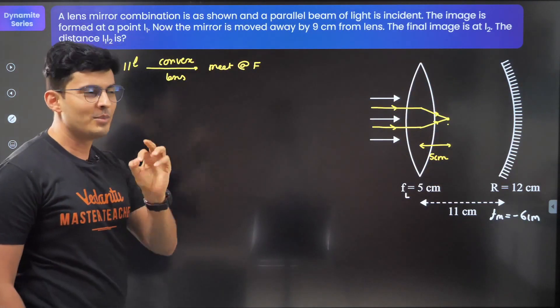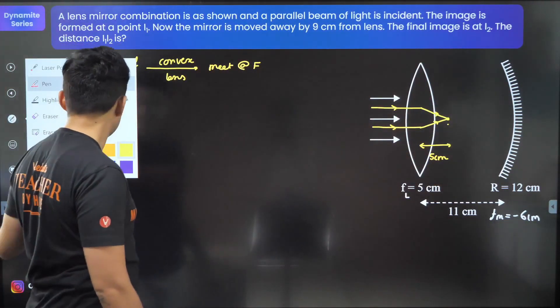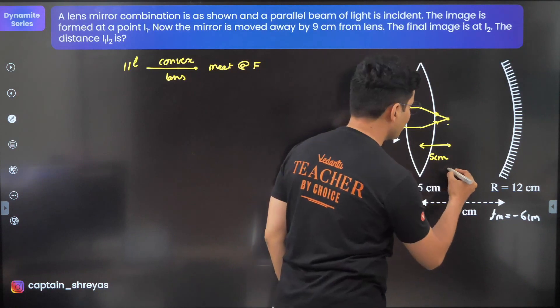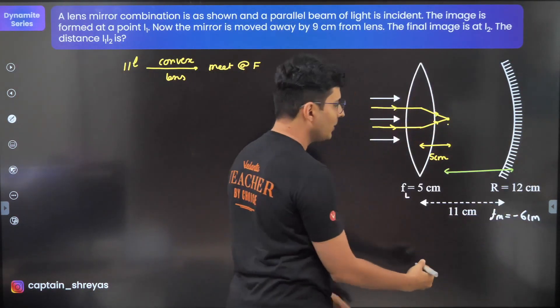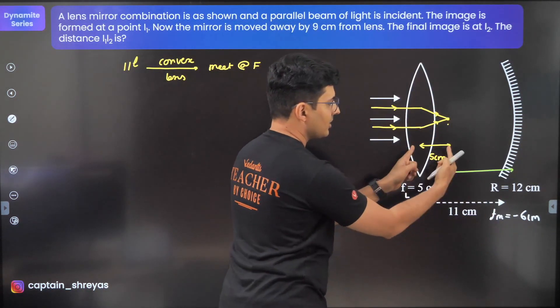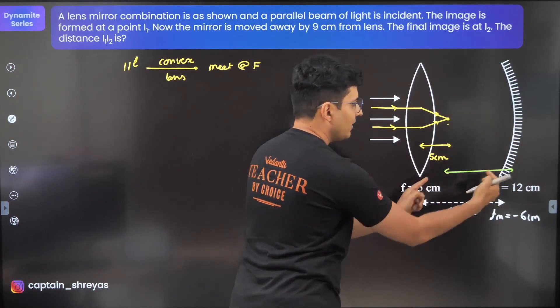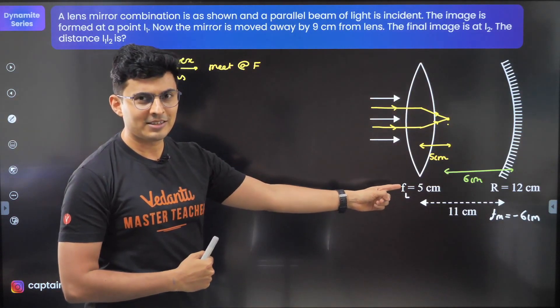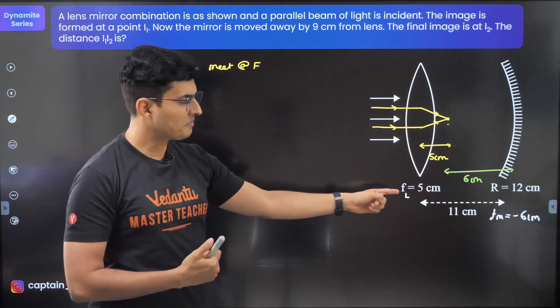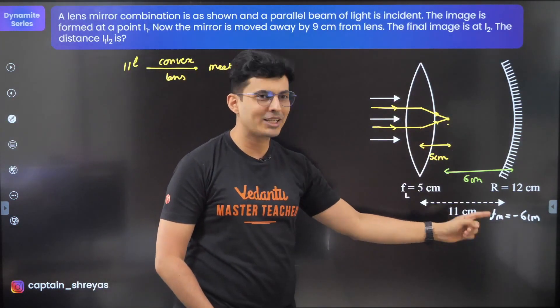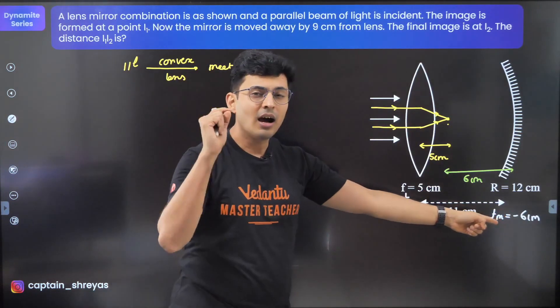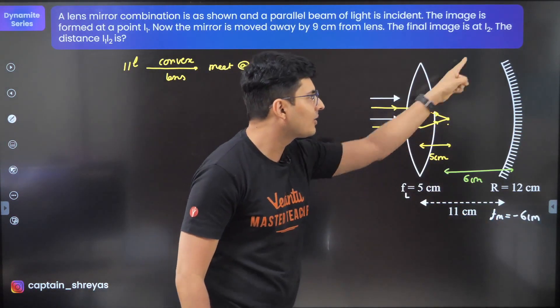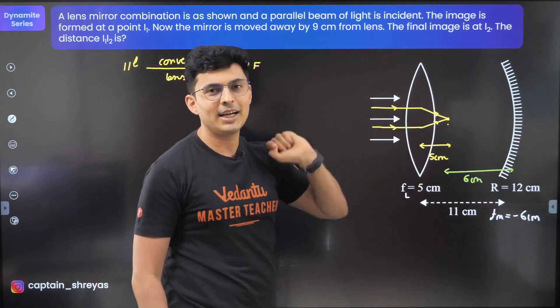This is an object for the mirror, and how far it is we can figure out very easily. This distance is 11, this is 5, so 11 minus 5 is 6 centimeters. Does the 6 centimeters ring a bell? This is 6, this is 6, so this is also the focal point for the mirror.